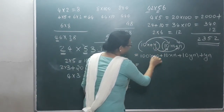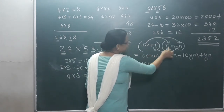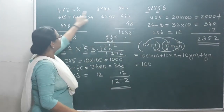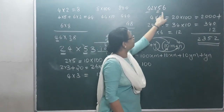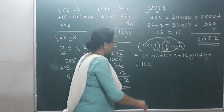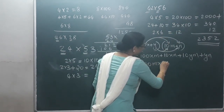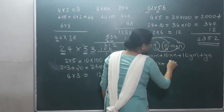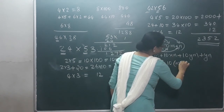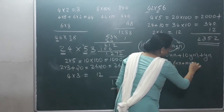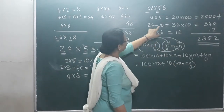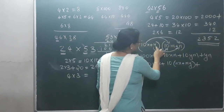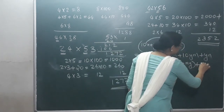We multiply the numbers in the tens entries — there is 10 outside — giving nx plus my, and we add those two, then multiply by 10. We multiply the ones-place entries, giving ny. So the full expansion is 100xm plus 10 times nx plus my, plus ny.